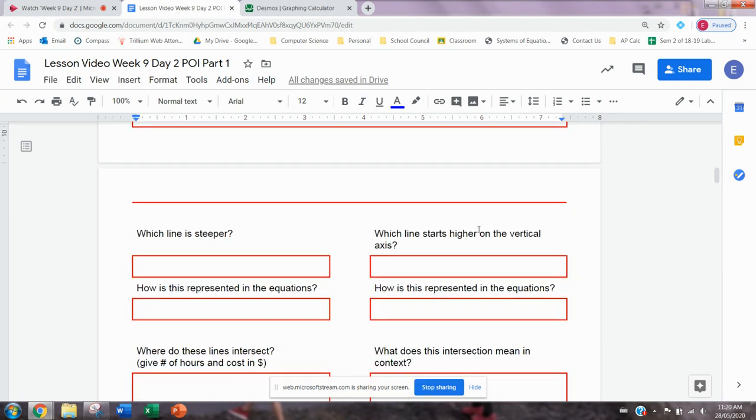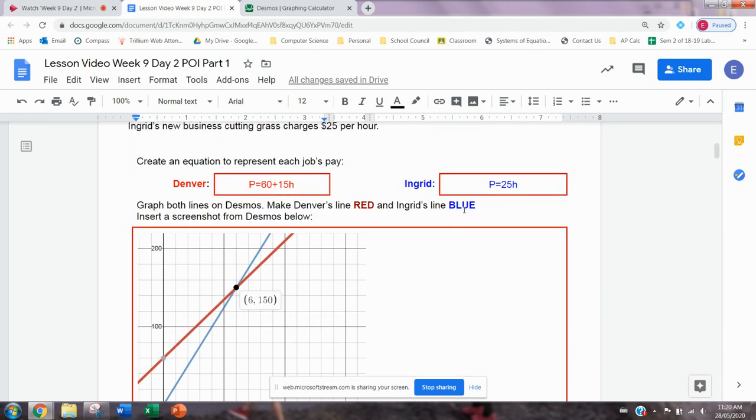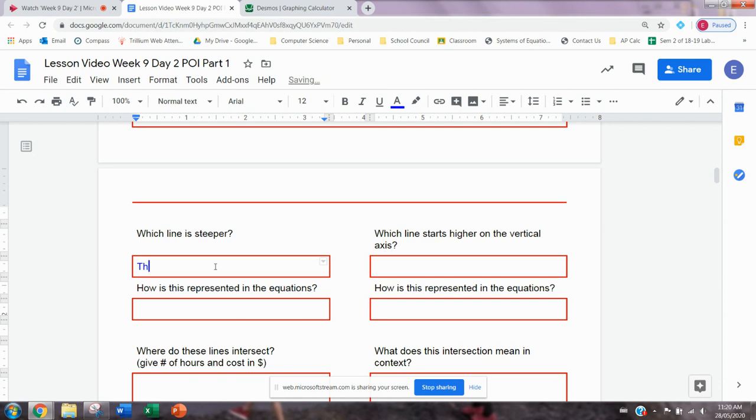I'm going to go down and answer some more questions because this is all dealing with the graph and the POI. So the first question says, which line is steeper? I'm going to go up and look at the graph. Is the blue line steeper or the red line steeper? We see that this blue line is increasing faster and that's a steeper hill kind of. It's a steeper angle than the red line. So the blue line is steeper and that's Ingrid's line. So I'm going to write blue line and in brackets, I'm going to put that that's Ingrid.